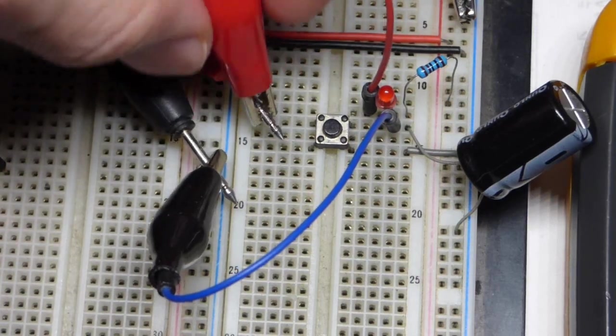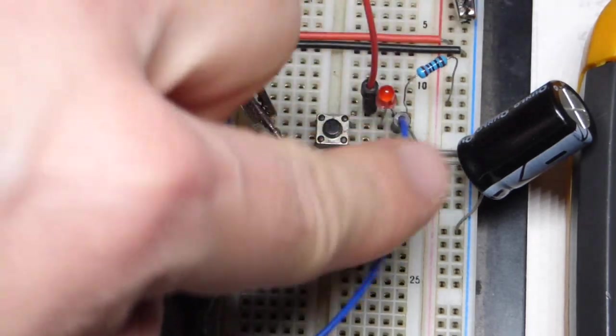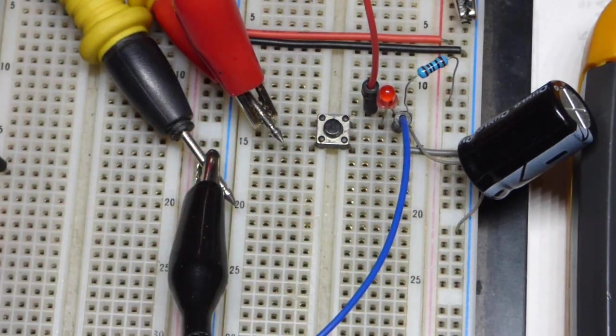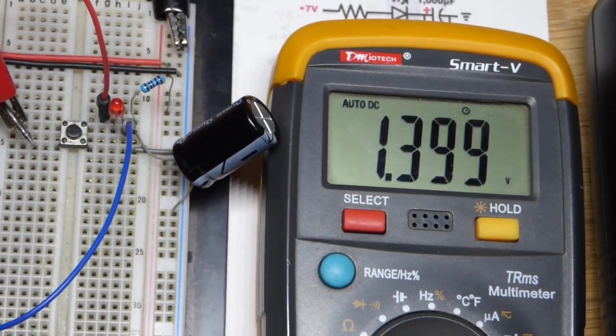And now I got these alligator clips, clipped to the probes, which I clamped to these breadboard wires right there. So we're on both sides of the LED. And there you can see, about 1.5 volts, approximately.